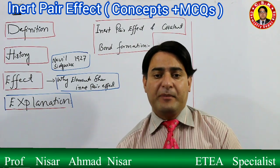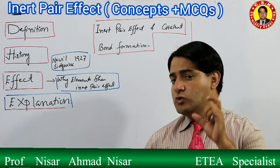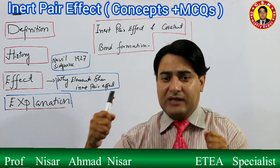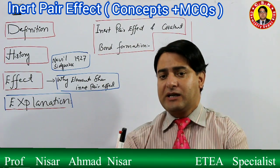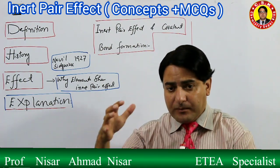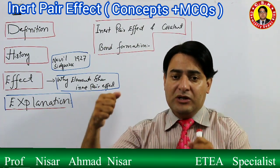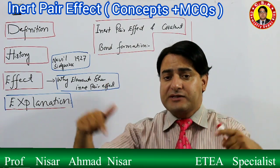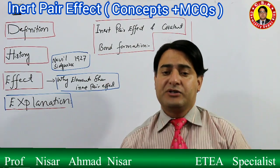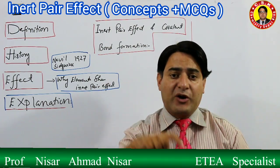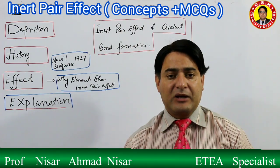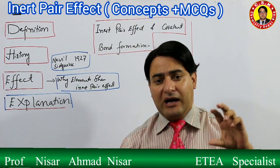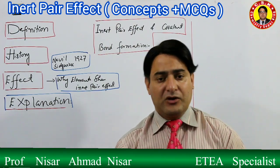Since these s-electrons cannot get excited, they cannot become unpaired, and therefore they do not participate in bonding - they remain as a lone pair, as an inert pair. In other words, when there is a significant energy difference between the s and p sub-shells of the valence shell, and a lot of energy is required to excite s-electrons into the p sub-shell, those s-electrons prefer not to participate in bonding and remain inert.